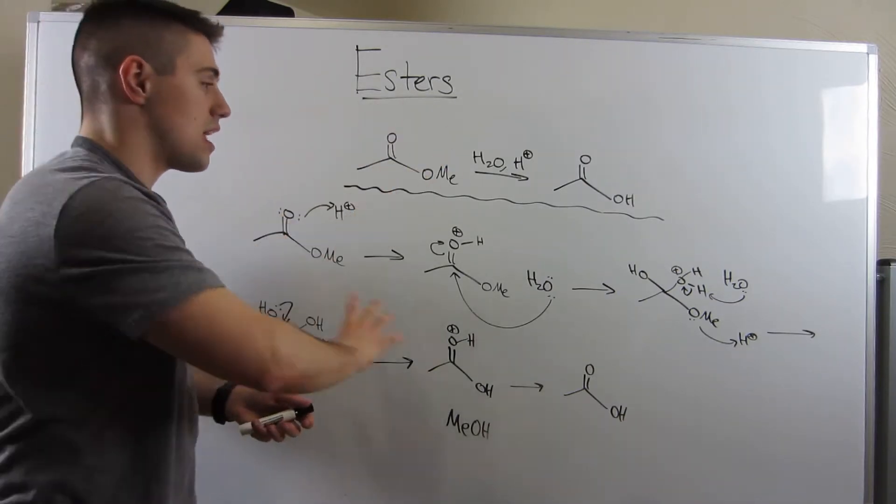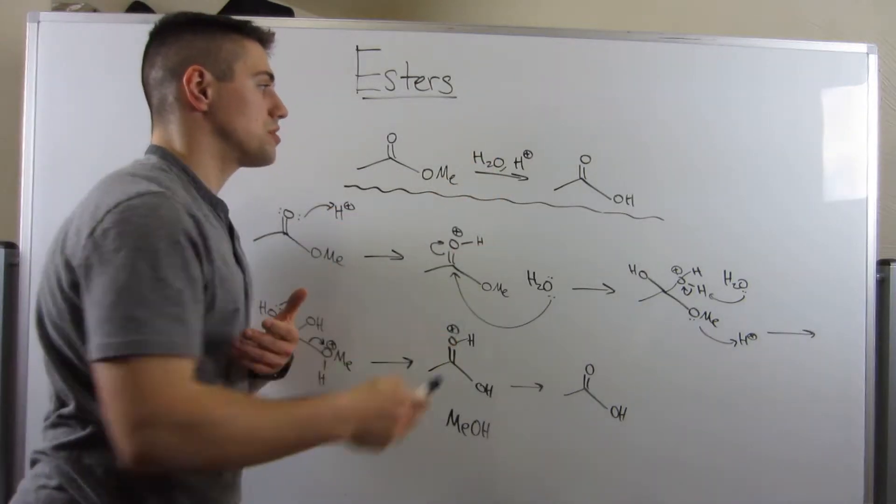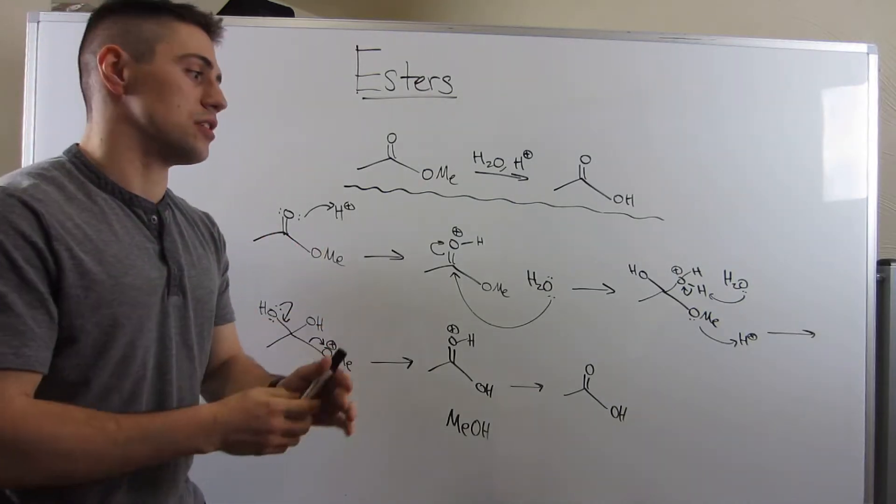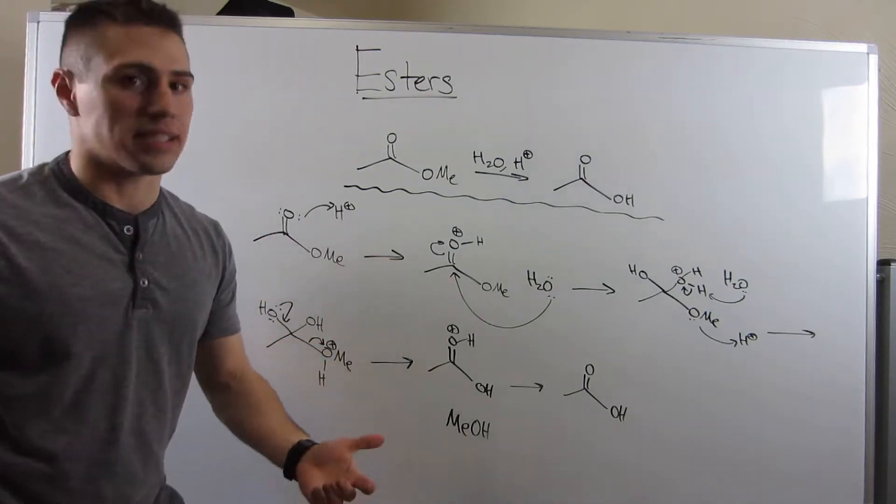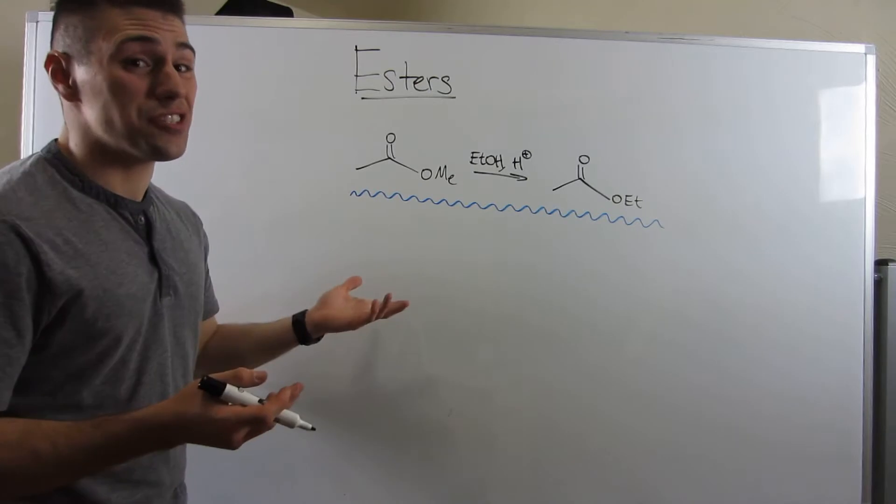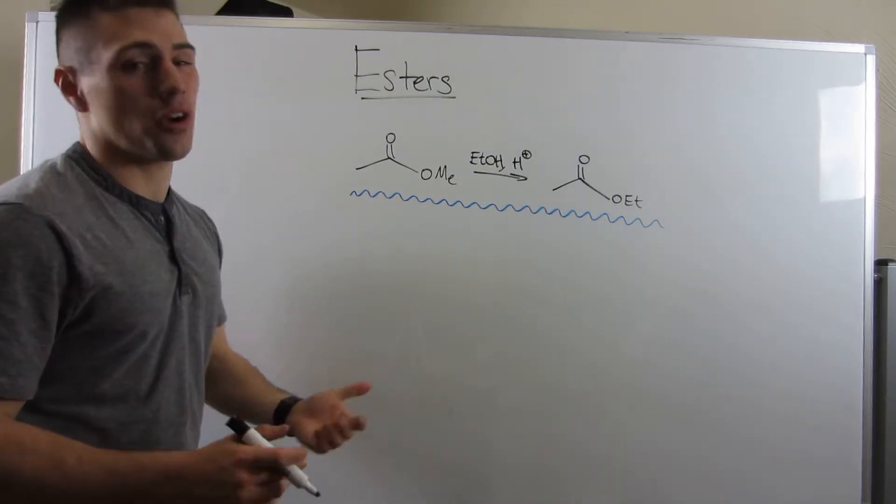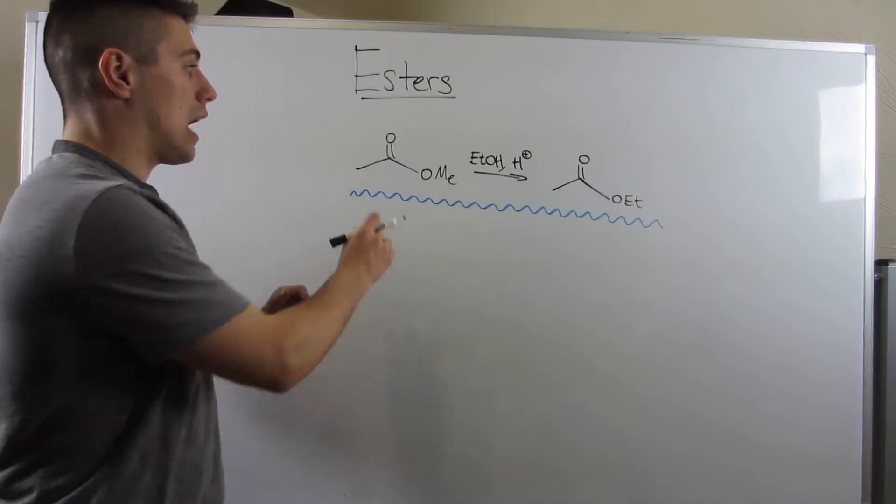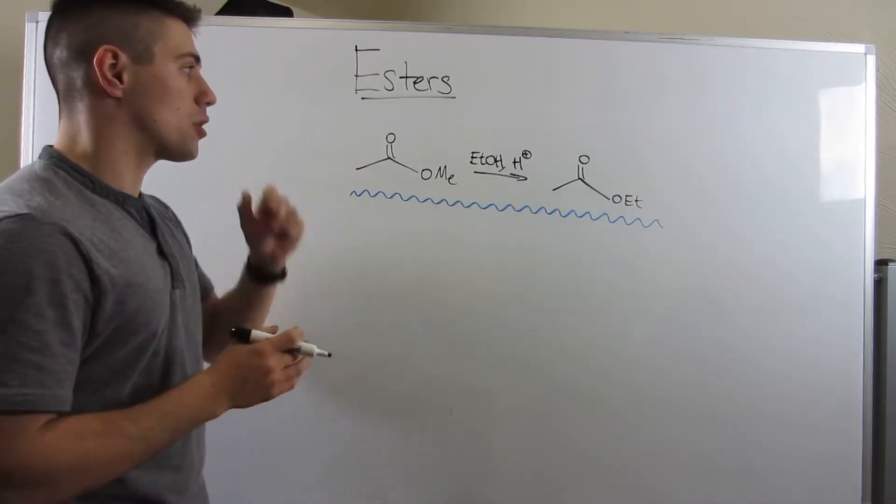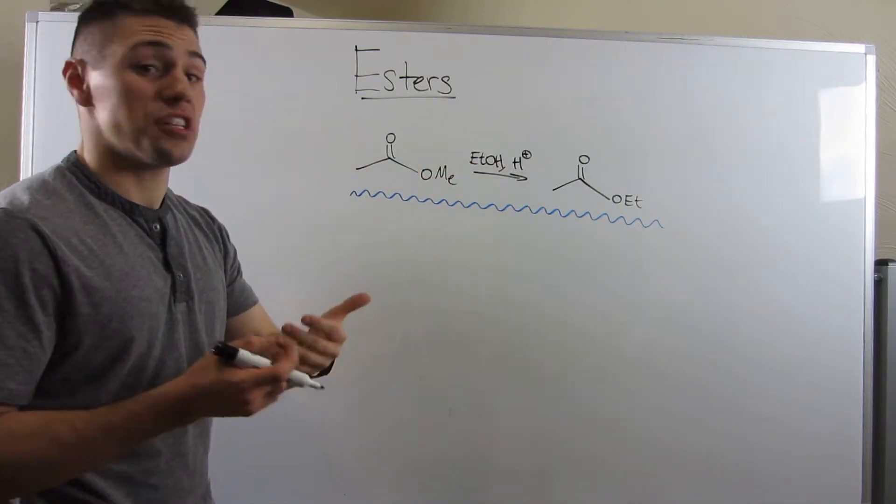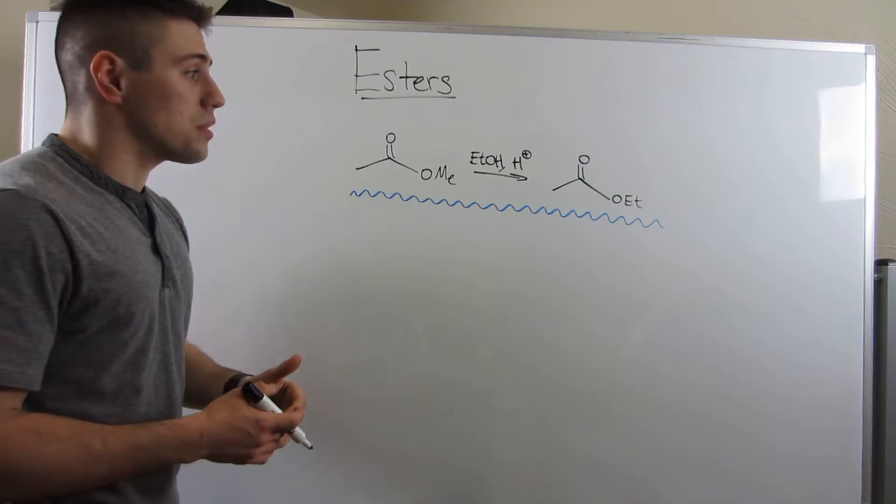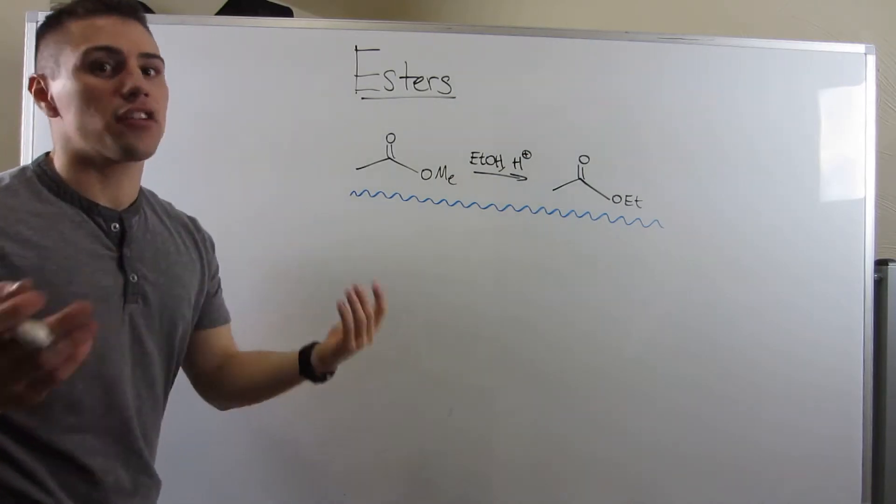I'm going to erase this and show you by just changing this H2O to something like ethanol or propanol, we can do something called transesterification. I'm going to draw the mechanism, it's the exact same thing. I changed the black line to blue, but I kept my same ester - I still have this O-methyl ether part in the carbonyl, but instead of water I changed it to ethanol. And you can see instead of a carboxylic acid, I just have a different ester.